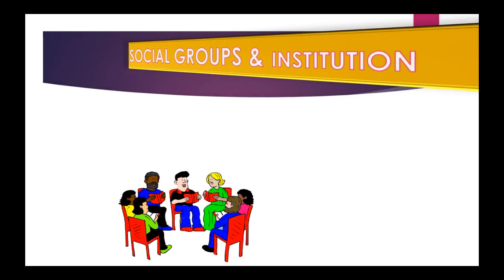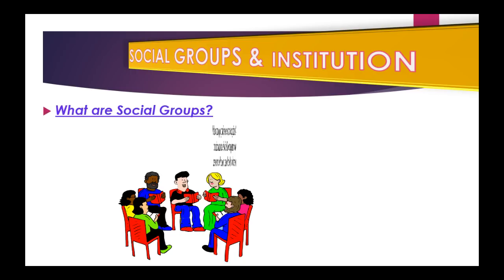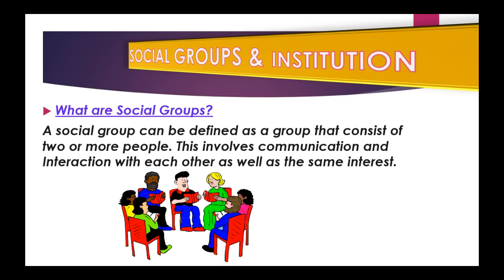Welcome back. In this video we'll be looking at social groups and institutions. First we must ask: what are social groups? A social group can be defined as a group that consists of two or more people. This involves communication and interaction with each other, and they normally have the same interests.